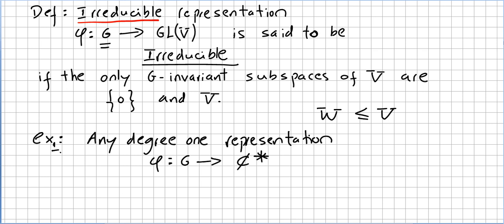A very first example: any degree 1 representation phi from the group G to the non-zero complex numbers is irreducible. This one is irreducible since the complex numbers have no proper non-zero subspace. So this is a very first example of an irreducible representation.